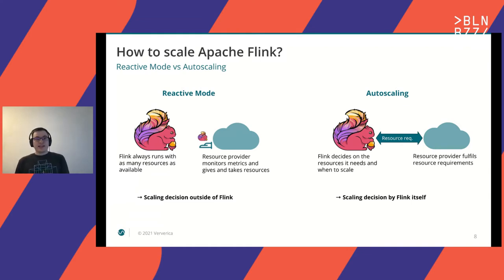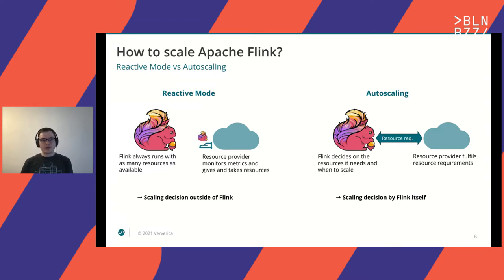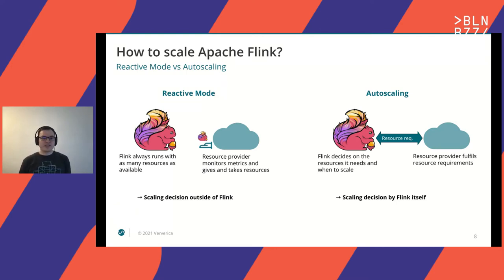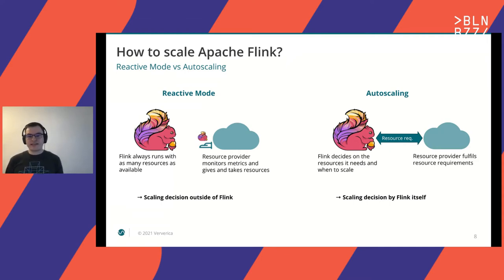The third approach is autoscaling. Comparing it to reactive scaling: in reactive scaling, Flink is in a mode where it always uses as many resources as possible — as soon as you give it more resources, it grabs them. The scaling decision is done outside of Flink. With autoscaling, Flink decides on the resources it needs and also decides when to scale, solving the problem that the scaling event might come by surprise. You can imagine optimizations where Flink only triggers a scaling event right after a checkpoint has been completed successfully, making it very cheap to change the parallelism. In summary, autoscaling is where Flink makes the scaling decision by itself.